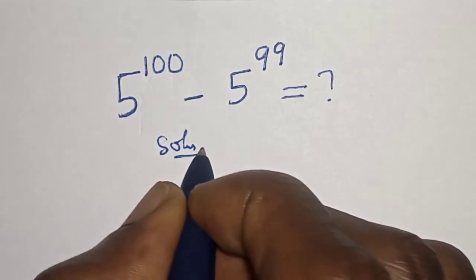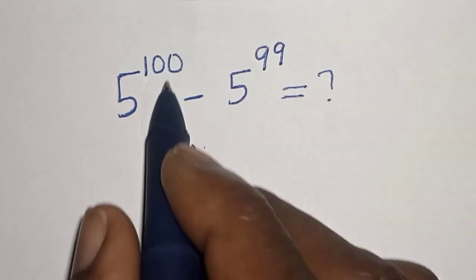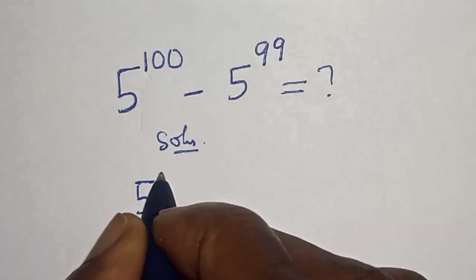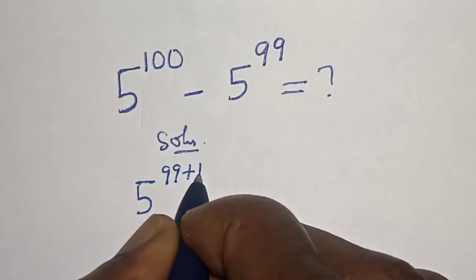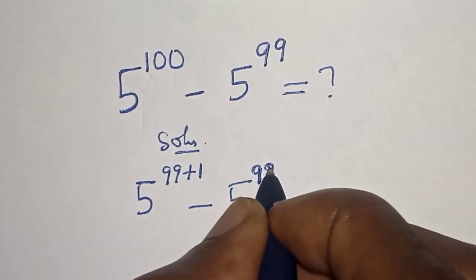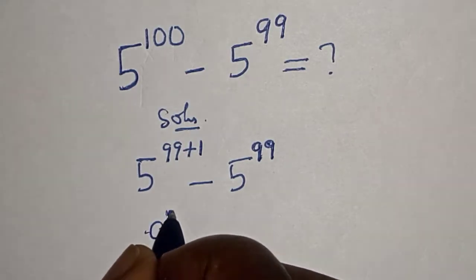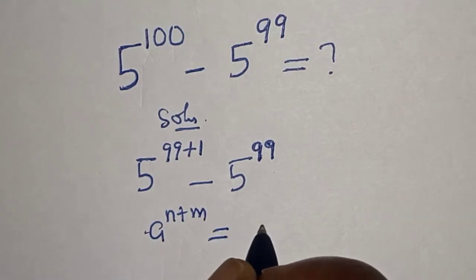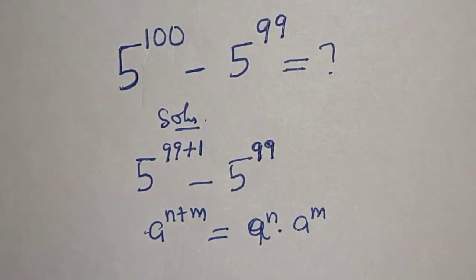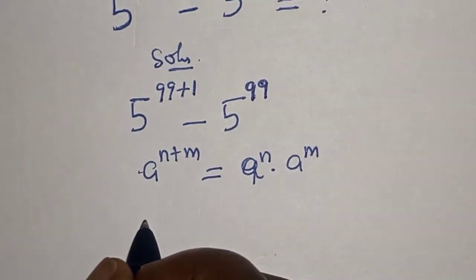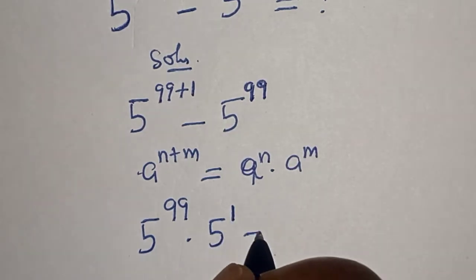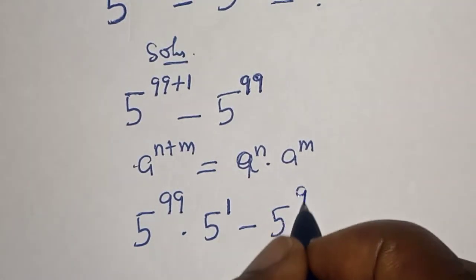Solution. 5 raised to power 100 minus 5 raised to power 99. This can be written as 5 raised to power 99 plus 1 minus 5 raised to power 99. If you have a raised to power n plus m, this is equal to a raised to power n multiplied by a raised to power m. And this is 5 raised to power 99 multiplied by 5 raised to power 1 minus 5 to the power of 99.